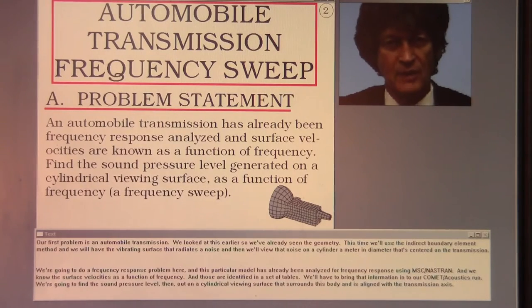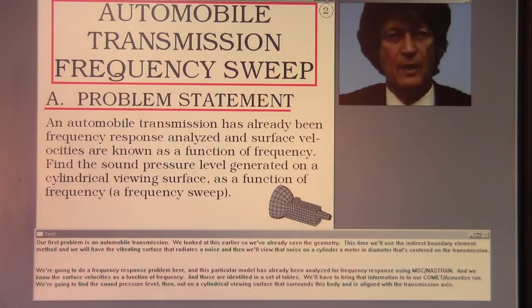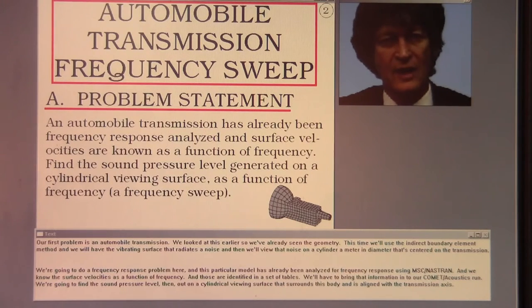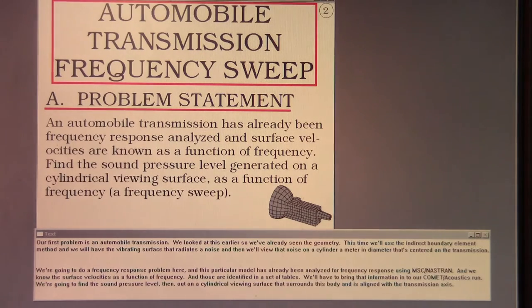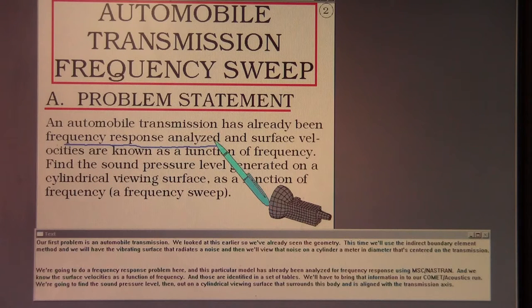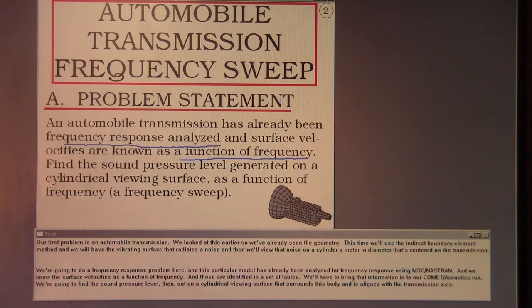Our first problem is an automobile transmission. We looked at this earlier so we've already seen the geometry. This time we'll use the indirect boundary element method and we will have the vibrating surface that radiates a noise. Then we'll view that noise on a cylinder one meter in diameter that's centered on the transmission. We're going to do a frequency response problem here, and this model has already been analyzed for frequency response using MSC Nastran. We know the surface velocities as a function of frequency, and those reside in a set of tables. We'll have to bring that information into our Comet Acoustics run. We're going to find the sound pressure level out on a cylindrical viewing surface that surrounds this body and is aligned with the transmission axis.